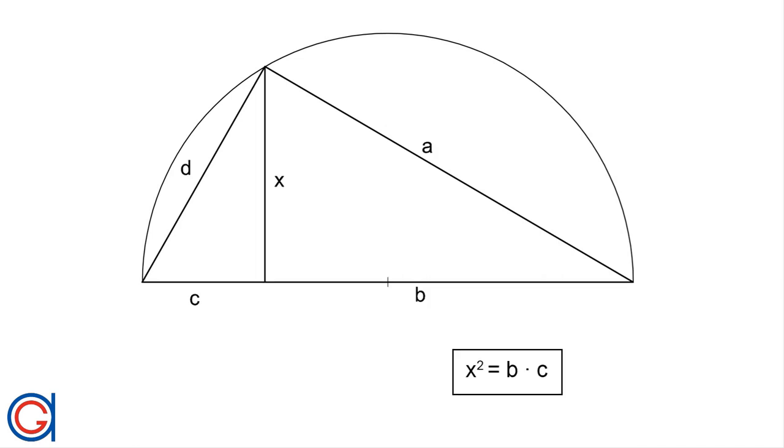If we draw the perpendicular height x, it divides the hypotenuse into two segments, c and b. And the theorem states that x squared is equal to b times c.